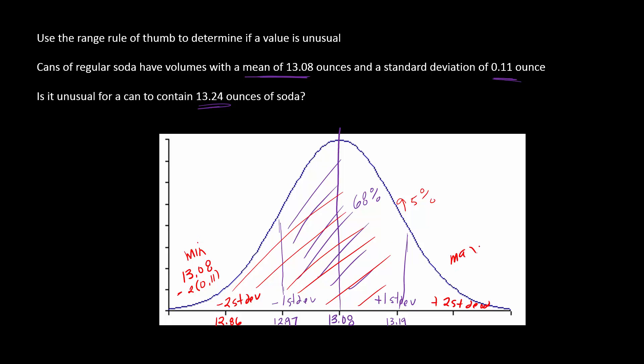But now plus two standard deviations, so you're multiplying two times 0.11 and you should get 13.30.